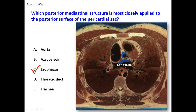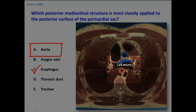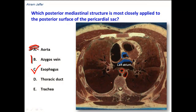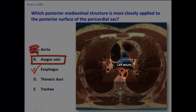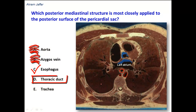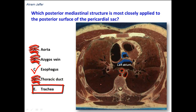Let's go into the options. Option A, the aorta — the aorta is also located behind the pericardial sac, but it's a little far from it. The azygos vein is located a little bit behind the esophagus and slightly to the right side of it. The thoracic duct is also posterior to the esophagus, so it is also incorrect. The trachea — at this level, the trachea has already bifurcated at the level of the sternal angle, so it will by no means be related to the posterior surface of the pericardial sac. The correct answer is the esophagus.